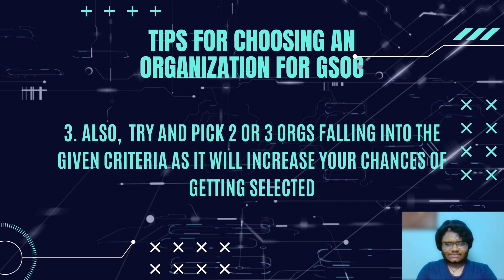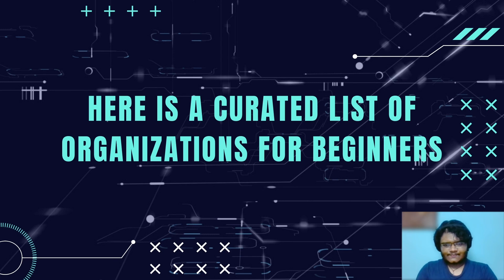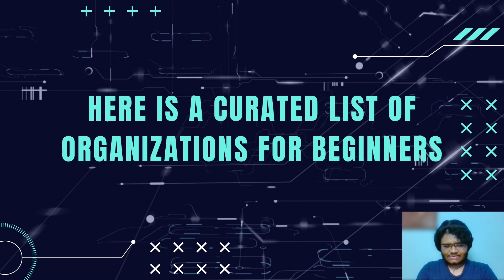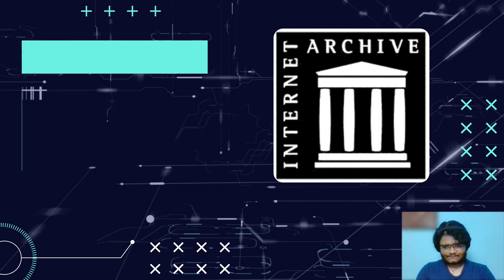And lastly, try and pick multiple organizations that fit into this criteria to contribute, as it will ultimately increase your chances of being selected. So now let's get into the list. The list consists of organizations which mostly use Python and JavaScript for their projects, as these languages have tons of resources to refer to and the learning process is much smoother than, let's say, C++ or Java. Also keep in mind, there isn't any inherent ordering amongst these five organizations. So choose the ones that you feel the most comfortable working with.